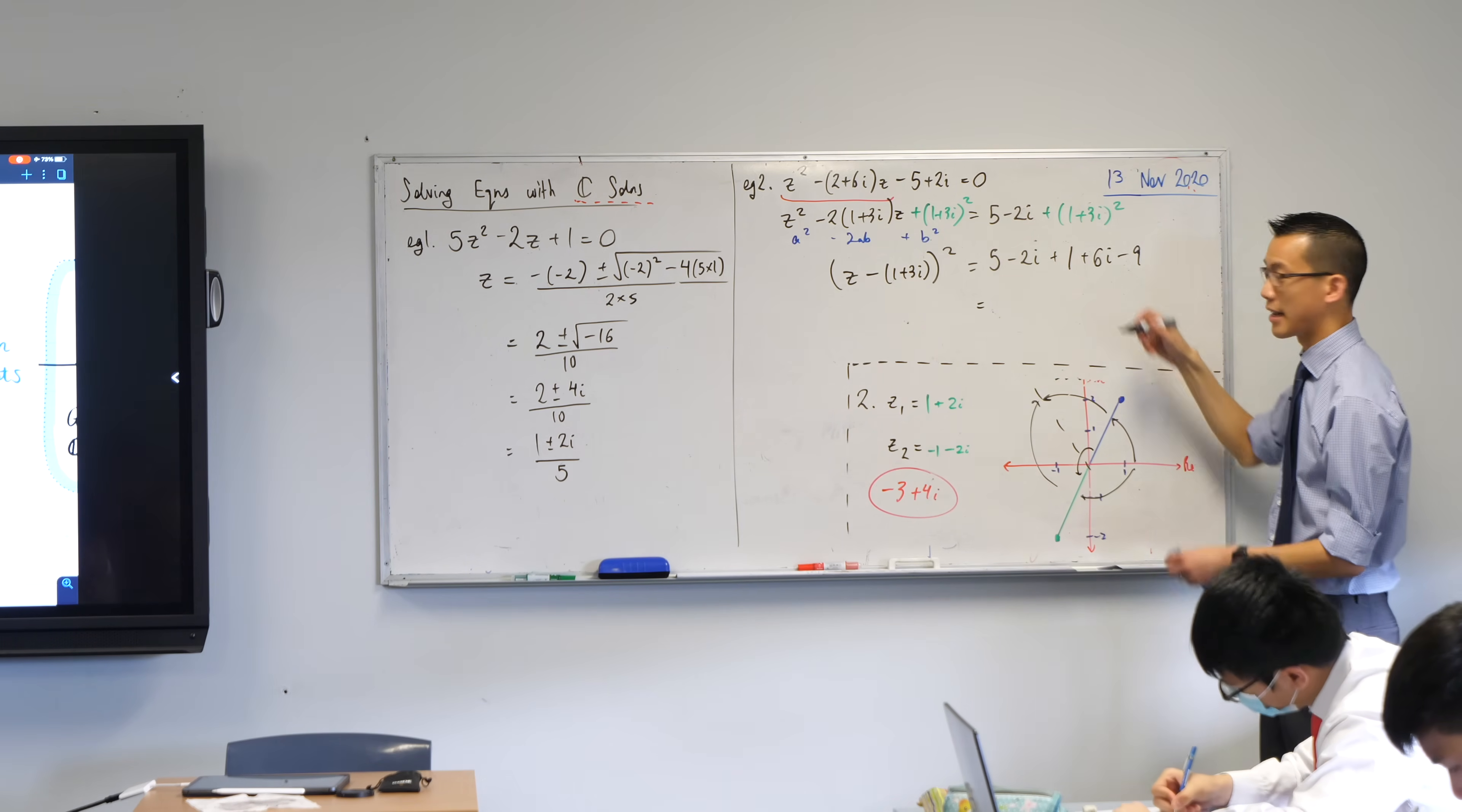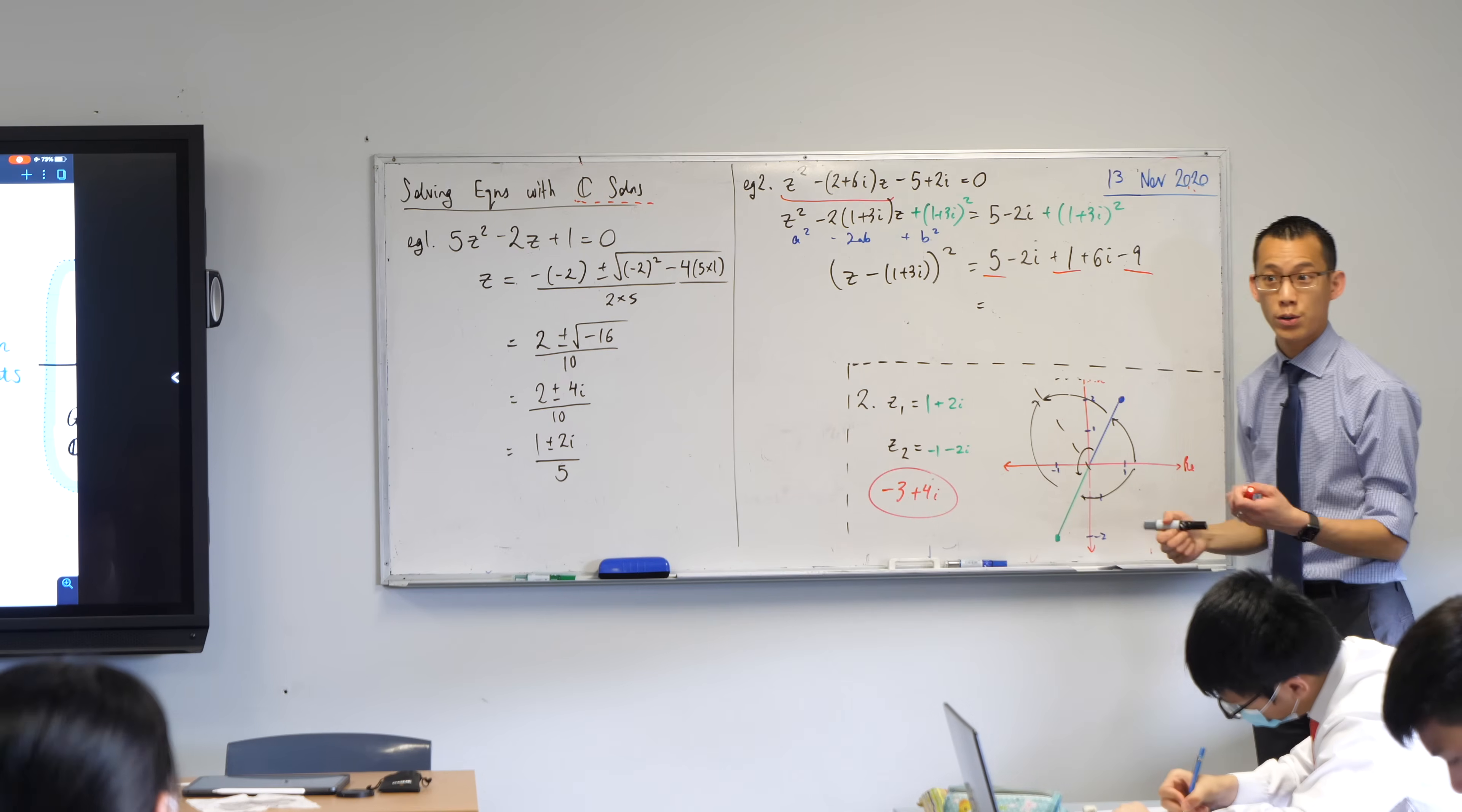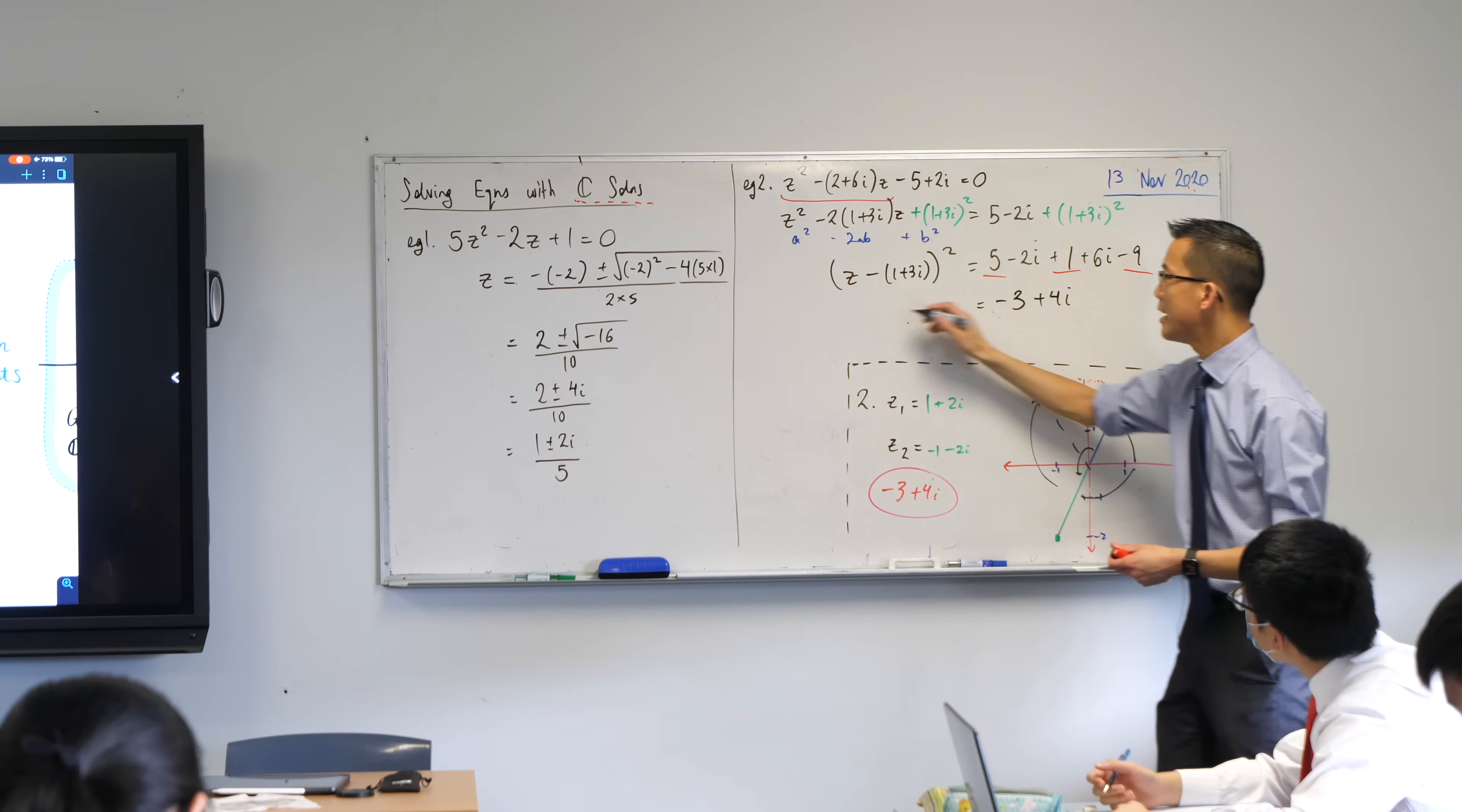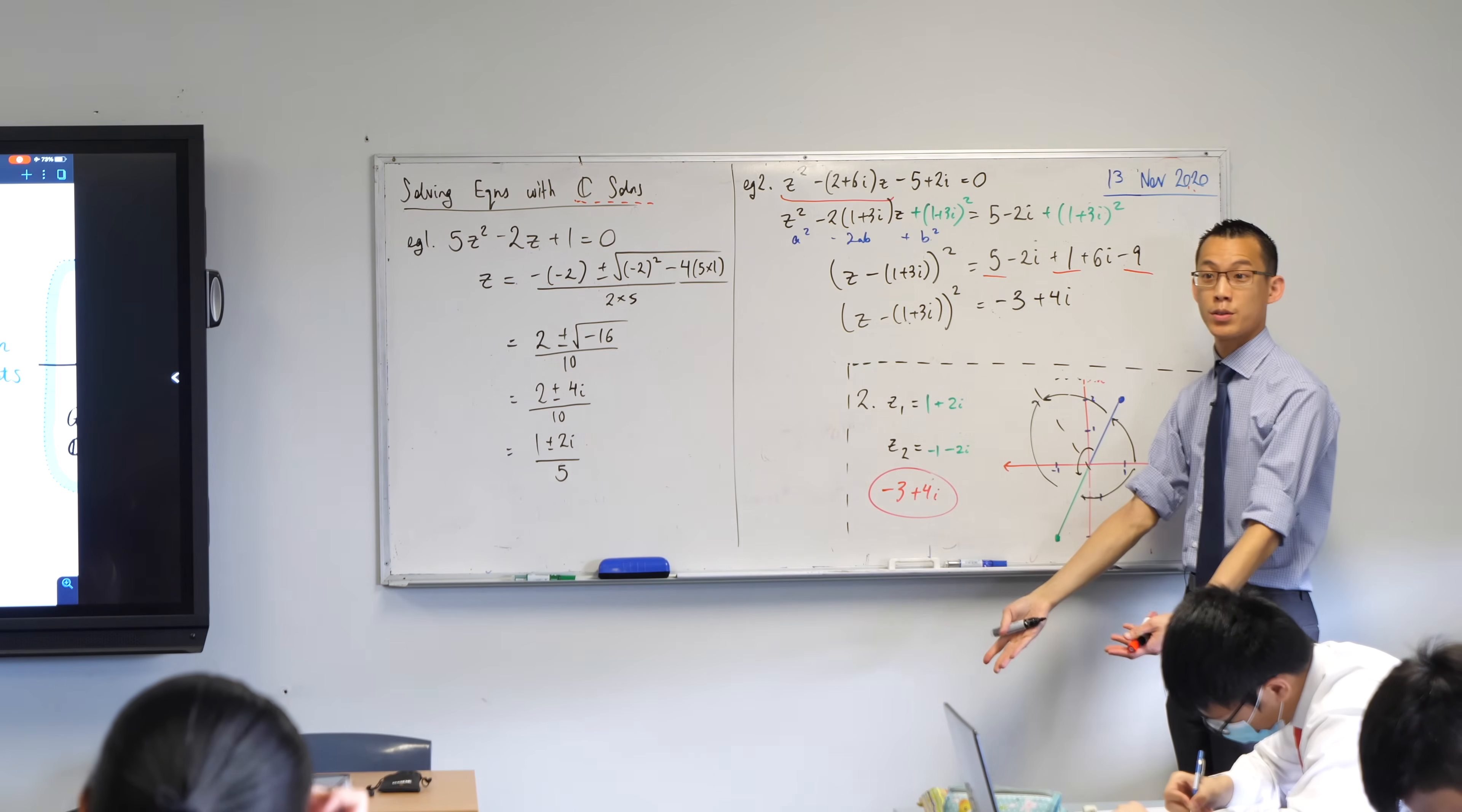But in order to tidy this up, I'm going to get something on the right-hand side here by collecting some like terms. So I think that I can see real, real, real. So when you put them all together, what's going to be your real term? Now you have 3. Imaginary term? Plus 4i. Okay. Now on the left-hand side, we still have this thing that's being squared.